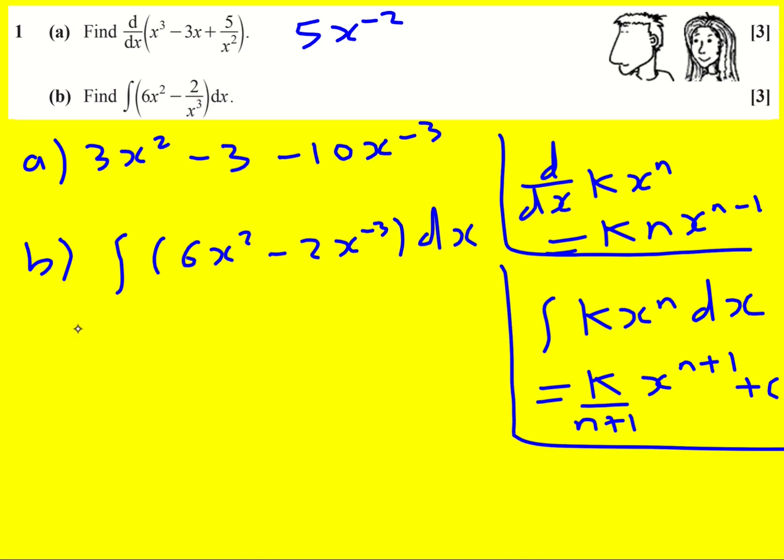For this first one, I'm going to add one to the power and divide by the new power, which is three. So I'll do six divided by three—let's put that step in. For this one, I'm going to add one to the power, so it becomes minus two.